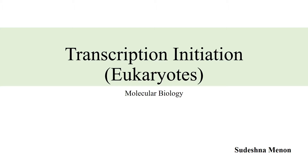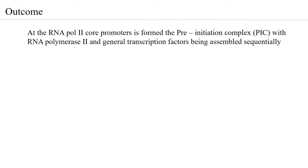Let us look at the sequential way in which transcription initiation proceeds. The outcome of this session is that at the RNA polymerase 2 core promoter, the pre-initiation complex is formed, with RNA polymerase 2 being part of the pre-initiation complex and the general transcription factors being assembled sequentially to form it.